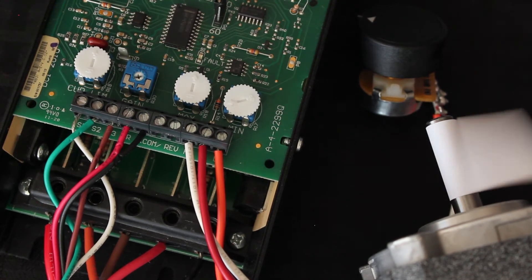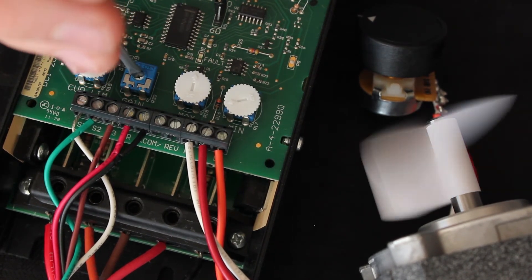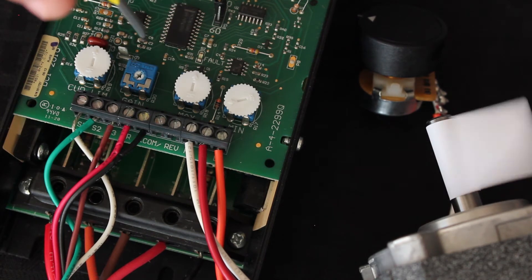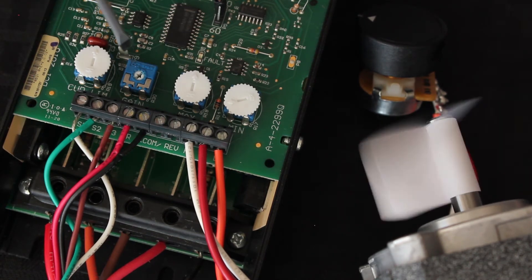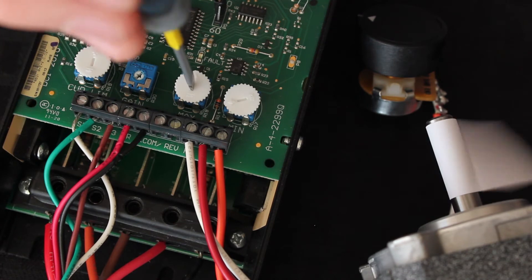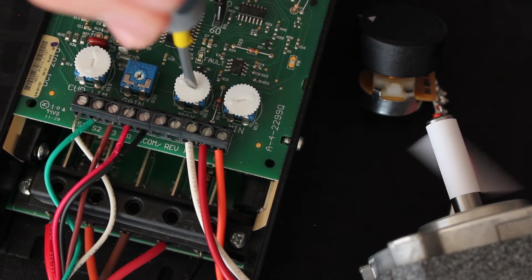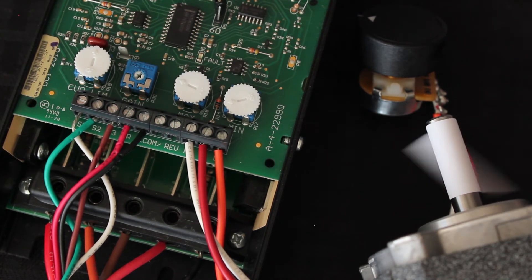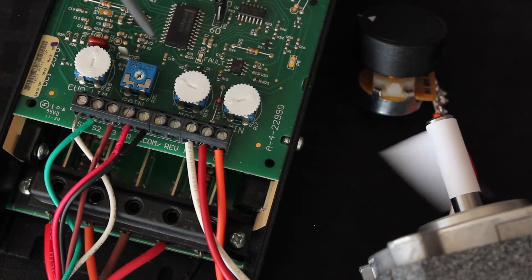If you rotate the gain trim pot fully clockwise and the motor speed doesn't decrease, rotate the max trim pot counterclockwise just enough to make the speed decrease slightly. Then rotate the gain trim pot counterclockwise just enough to return the motor to full speed.